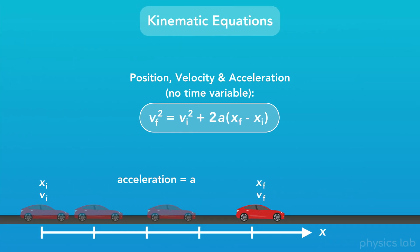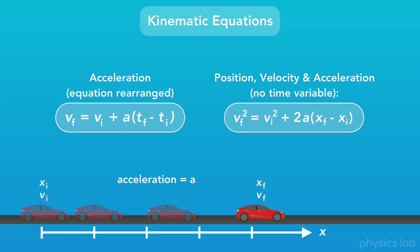The last kinematic equation that we'll learn for linear motion relates the position, velocity, and acceleration of an object, but it doesn't include the variable for time, which is pretty interesting because time is a fundamental part of kinematics. This equation is actually made by combining and rearranging a few other equations in order to get rid of the variable for time, which makes it really useful for certain problems where we don't know anything about time. For an object that is accelerating, like this car, this equation will help us find the final velocity of the object based on its initial velocity, its acceleration, and its change in position. This looks very similar to the equation we learned for acceleration, if we had rearranged the variables, like we mentioned in the last video.